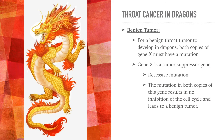Now let's go back to the scenario. For a benign tumor to develop, both copies of gene X must have a mutation. This indicates that gene X is a tumor suppressor gene, meaning the mutation must be present in both copies. This results in no inhibition of the cell cycle, which leads to the development of a benign tumor.